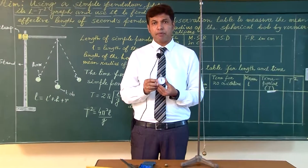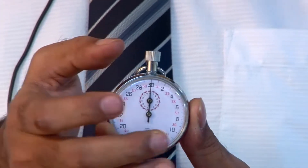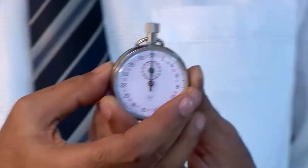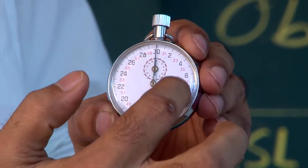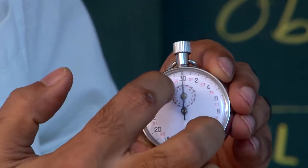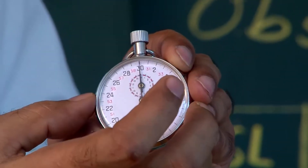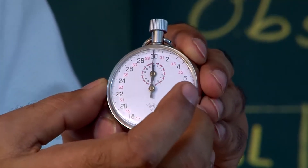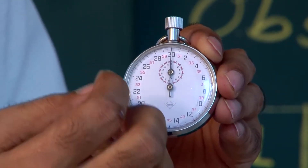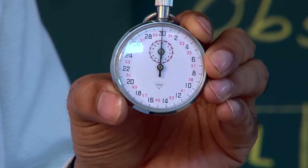Time period can be measured with the help of a stopwatch. This is the start button, the stop button, and the reset button. There are 30 divisions marked in black and 31, 32, 33 marked in red. There is also a small scale to measure time in minutes. The least count of this stopwatch is 1 by 10 second, which is 0.1 second, since 10 small lines are marked between any one second.